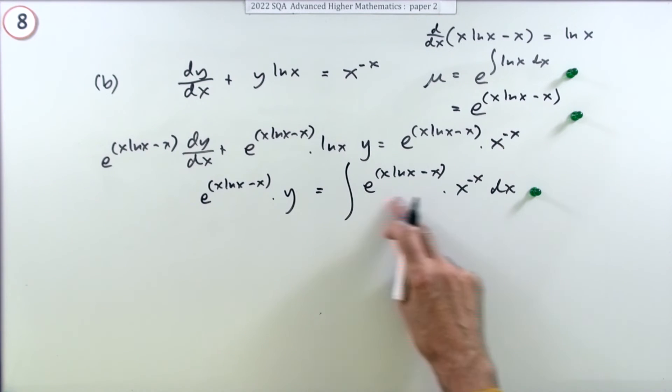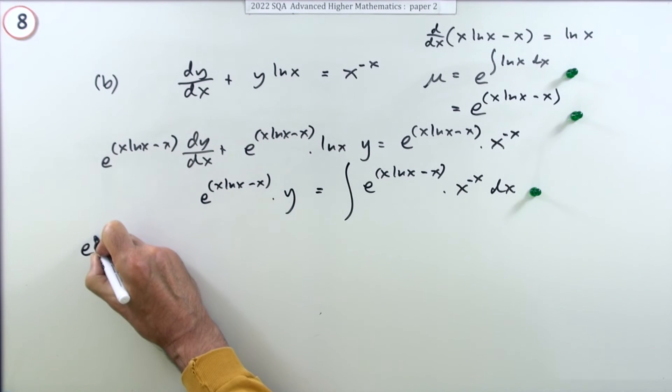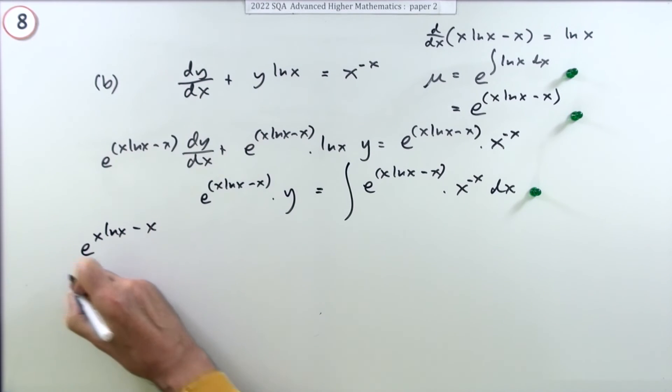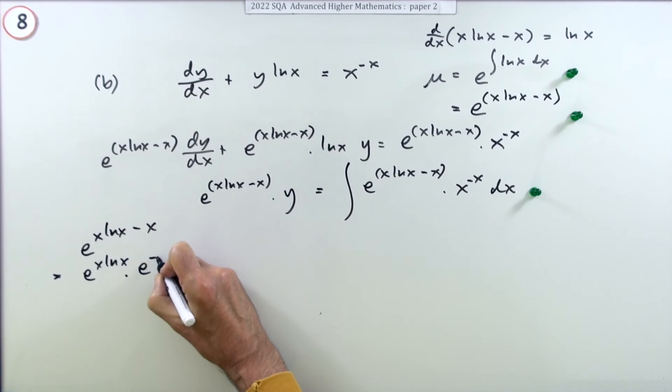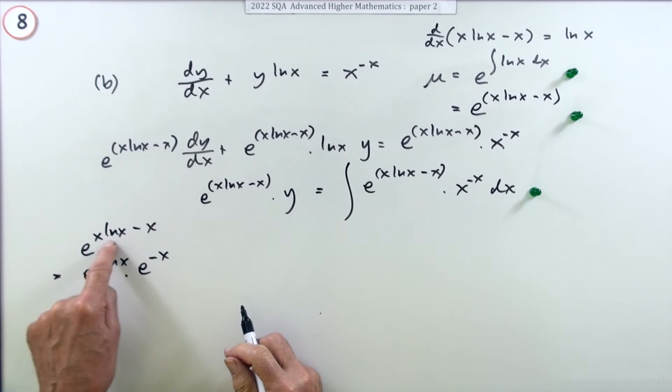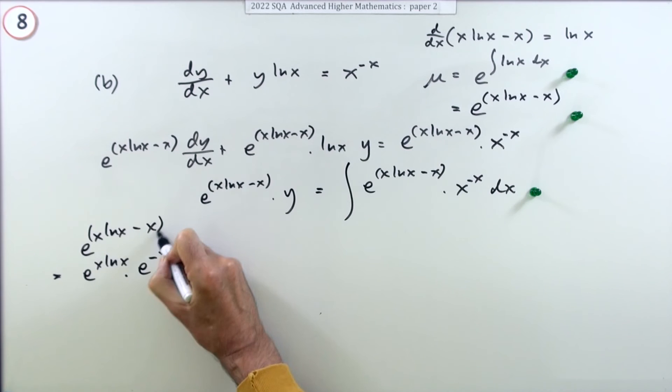Now that term there's a wee bit sort of jumbled up. You could simplify that expression. I don't want to keep writing over and over again. I'll put it over here. If you've got e^(x*ln(x) - x), you could start splitting that up. That would be e^(x*ln(x)) times e^(-x), just splitting those parts.